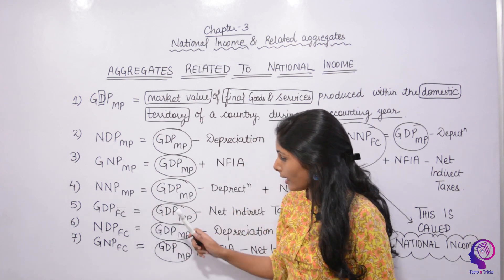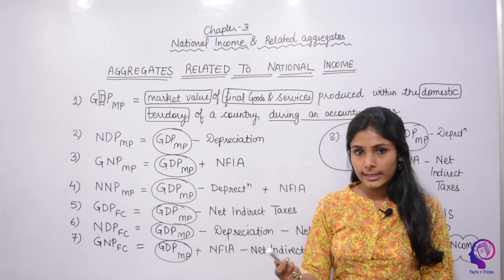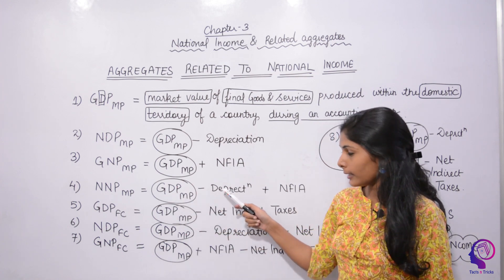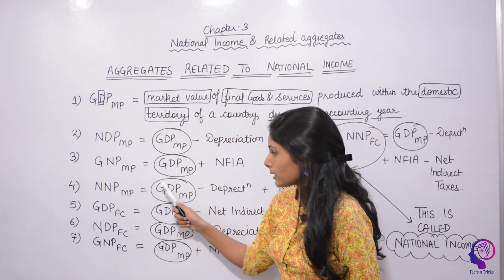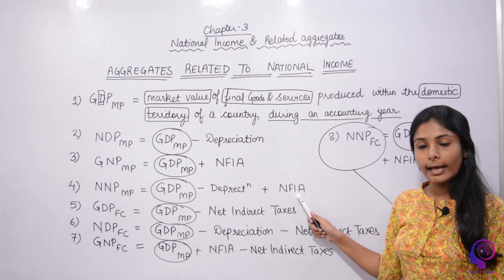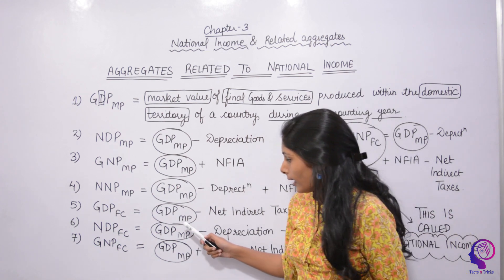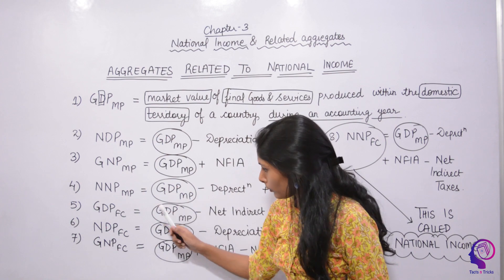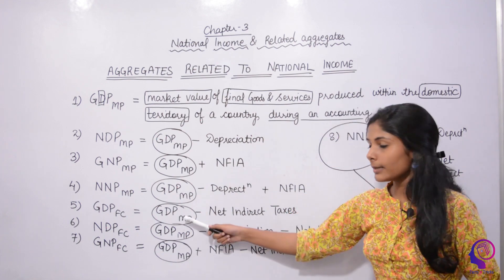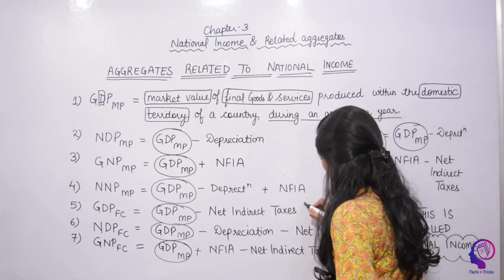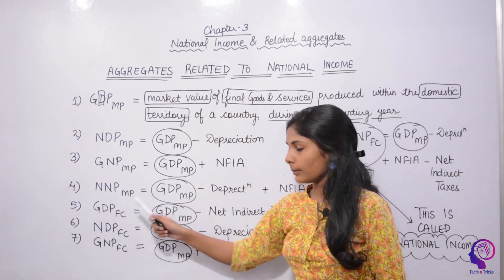To go from GDP MP to NNP MP, there is a gross-to-net difference and a domestic-to-national difference, with both at MP. So: GDP MP minus Depreciation gives NDP MP, then plus NFIA gives NNP MP. Next, to go from GDP MP to GDP FC, we subtract net indirect taxes to get GDP at factor cost.